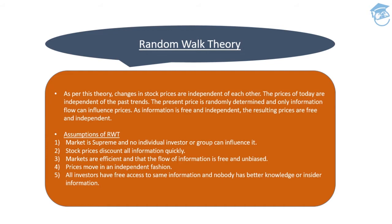Assumption number three: markets are efficient and the flow of information is free and unbiased. If information is absorbed quickly, the market becomes efficient, and information flow remains free and unbiased. Assumption number four: prices move in an independent fashion. You can't judge what will happen next — something big or small could happen, or nothing at all — so prices move very independently.